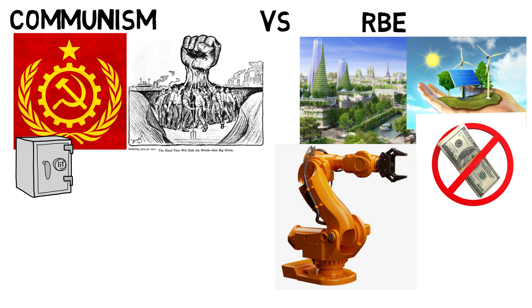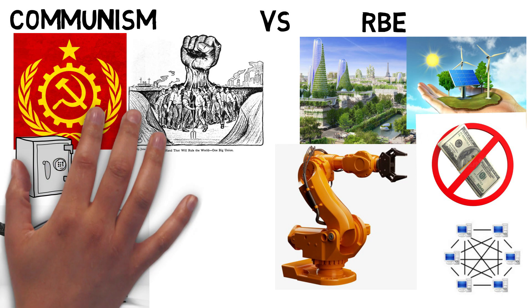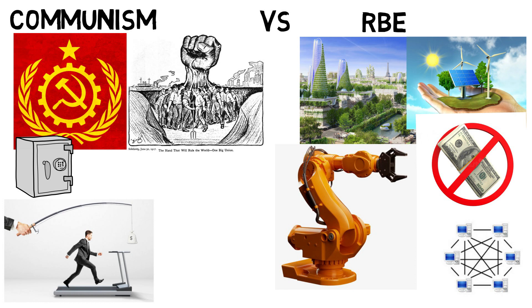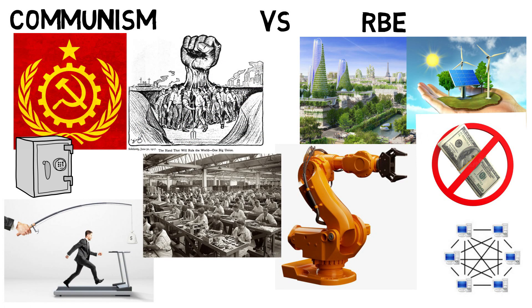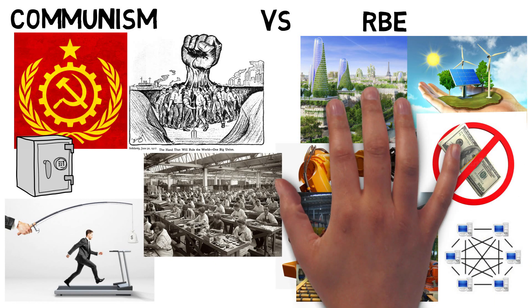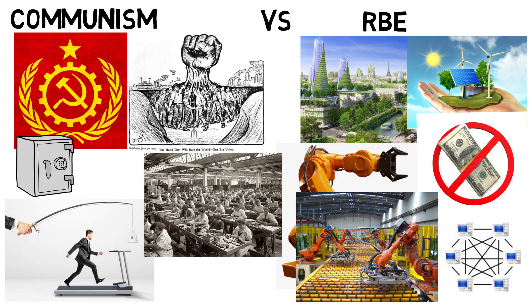Government is replaced with an open-source, decentralized, collaborative computer system. In true communism, there is no money, and the strongest criticism of communism is that it removes the incentive for people to work harder than they absolutely have to. It also leads to resentment of those who work less but receive the same. This is not a problem in an RBE. Tasking and repetitive jobs are done by machines, and the rest of the jobs are done by volunteers. The incentive to do a job is because it's meaningful and has a direct positive impact on everyone, including the one doing the job.